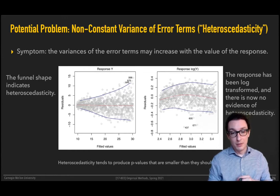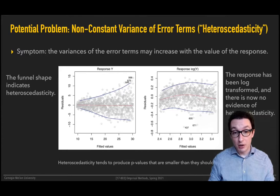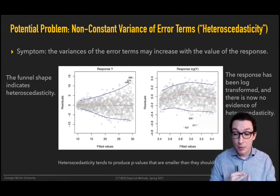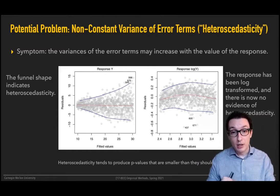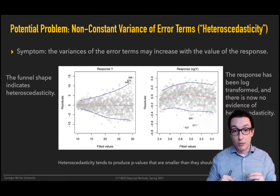The common fix for heteroscedasticity is to transform your predictor variables. In this example, I've transformed the variables by logging them. The log transformation compresses the range, so the distance between extremely high values becomes more compressed. Modeling log(Y) as a function of X results in a much better-behaved residual plot and a more valid model. This is essentially fitting a log curve using linear regression — or as one might say, 'cheating,' but in linear algebra it's called changing your basis.